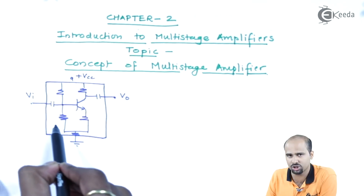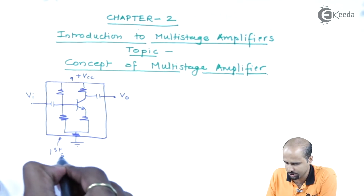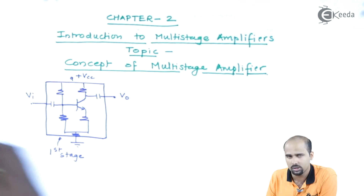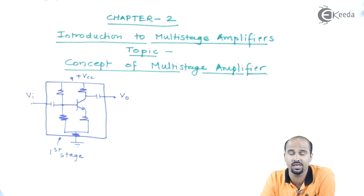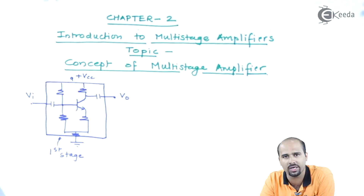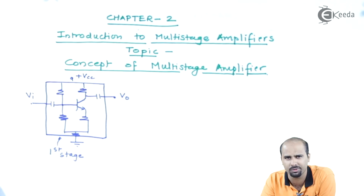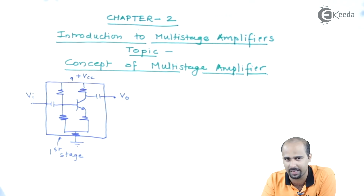This box represents nothing but the first stage, or I can say this complete circuit is nothing but a single stage amplifier. So it will be very clear that my intention in drawing this circuit is to help you understand the difference between a multistage amplifier and a single stage amplifier.